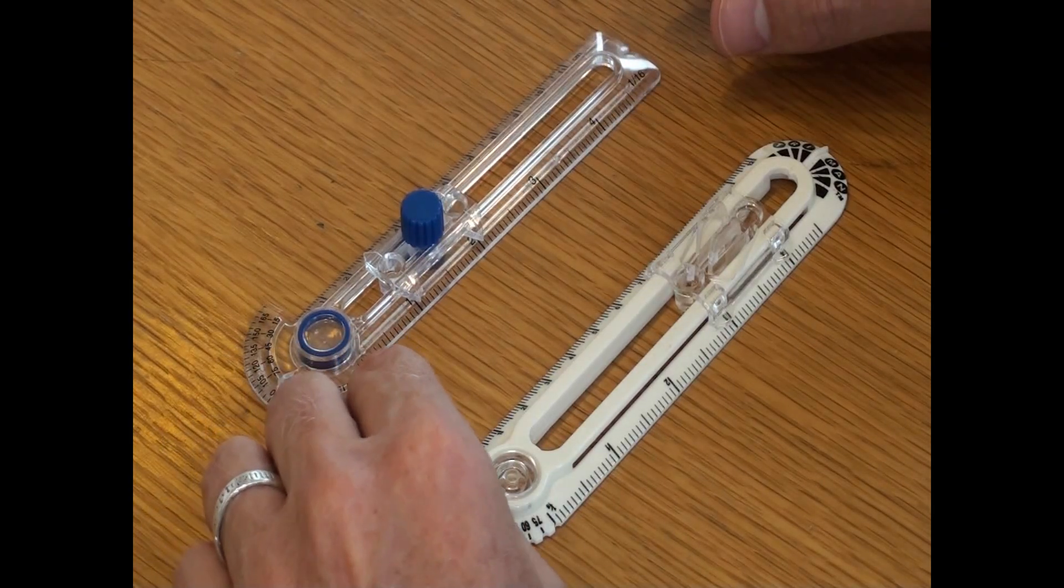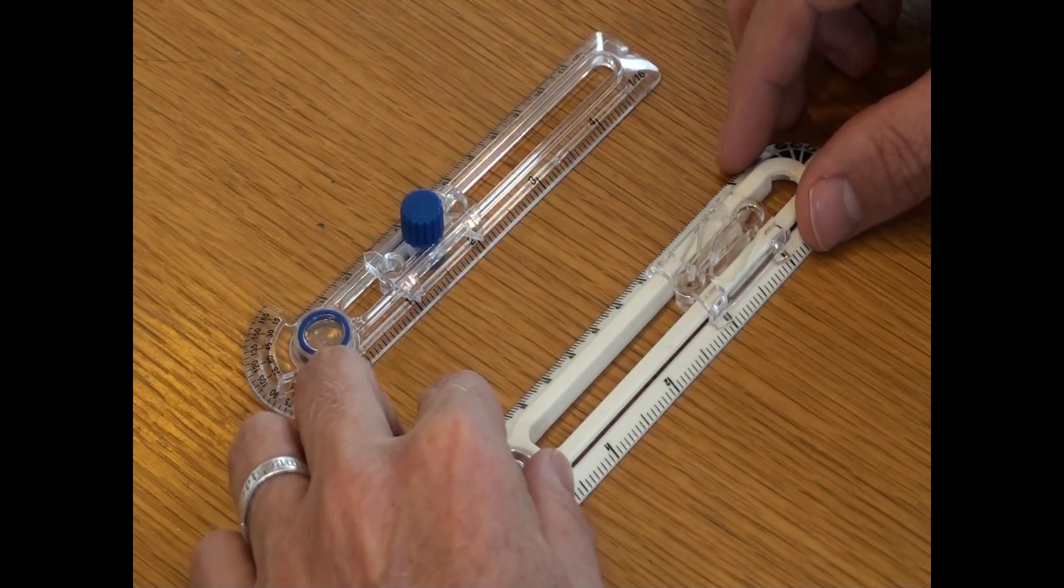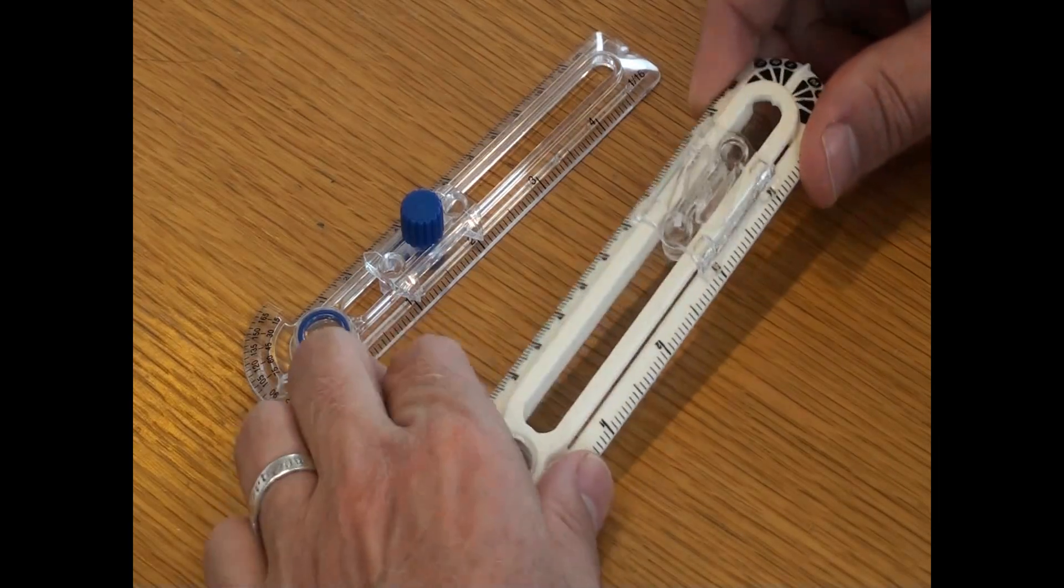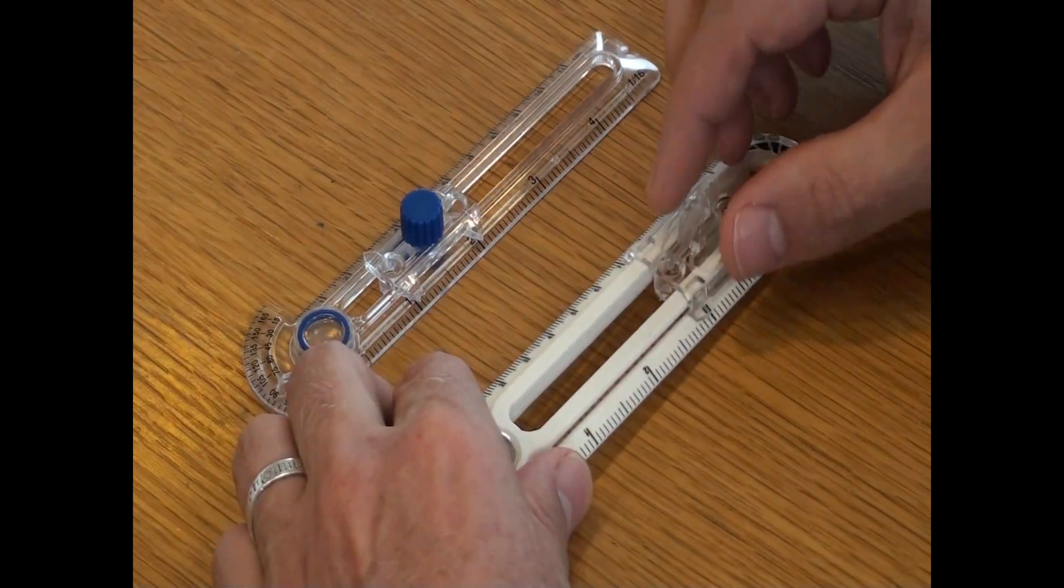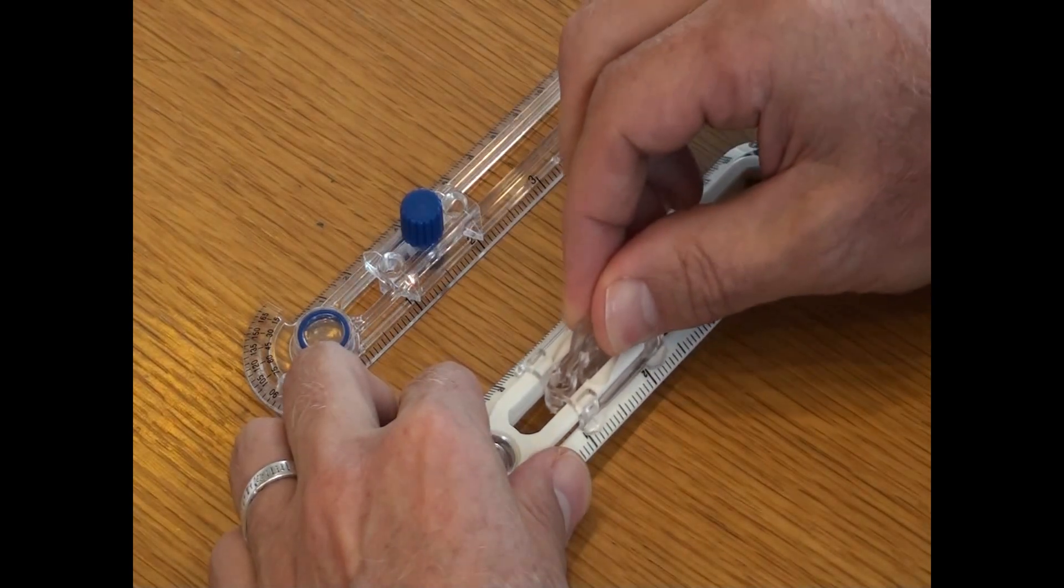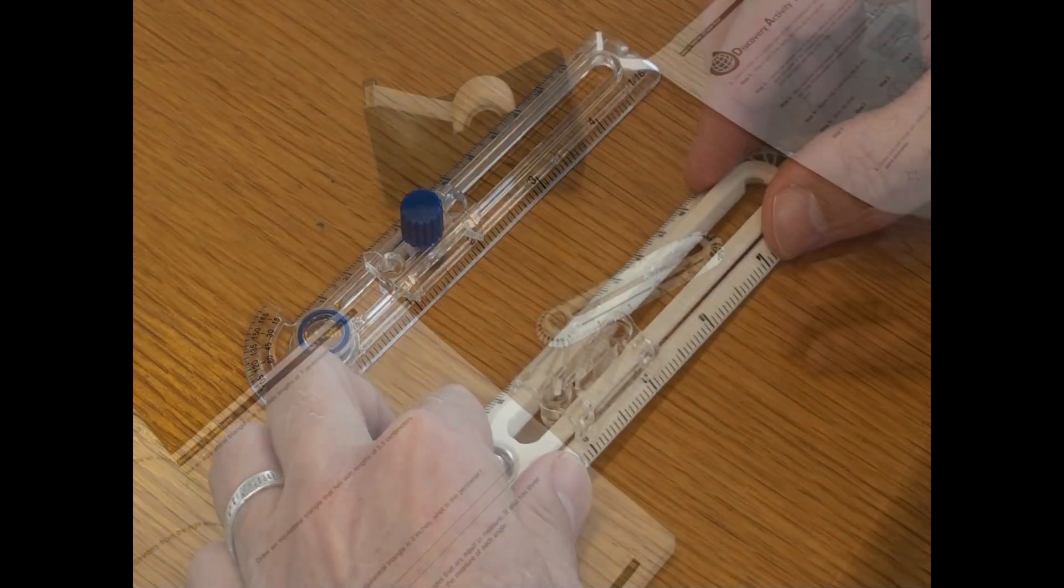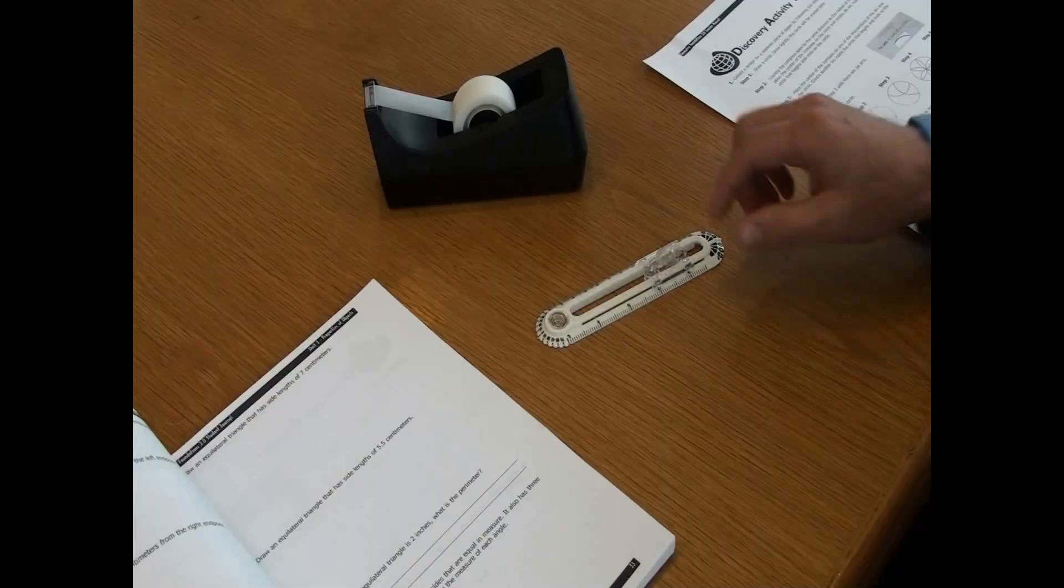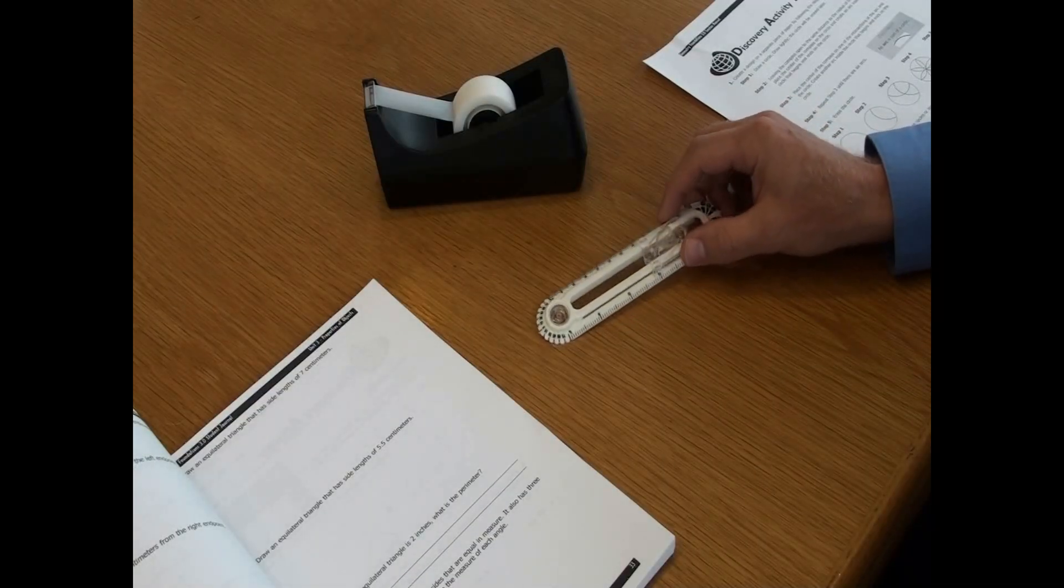For slides that only use friction, the students should be careful not to twist the compass or put too much pressure on the slide. If they do, the slide will become loose over time and will not stay in position. For our purposes, I will use this friction compass for my demonstrations.